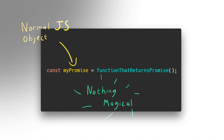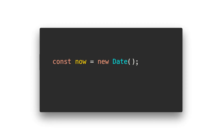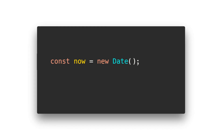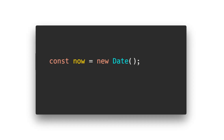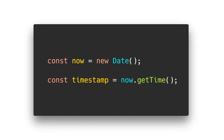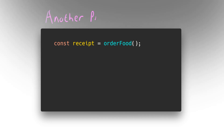The promise object you get back is just like any other JavaScript object you've already seen — for example, the Date object. If you create a new Date object using the new keyword, you now have a variable that has methods on it that you can call to do various actions with that object. An example of that would be the getTime method on the Date object that will give you the Unix timestamp. The promise object that you get back also has a few methods on it, and the two most common of these are .then and .catch.